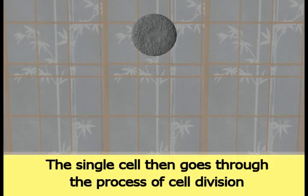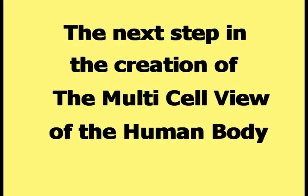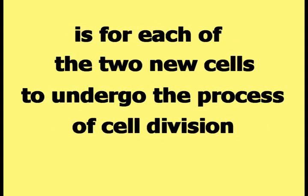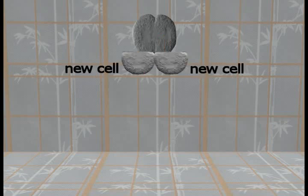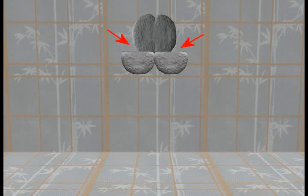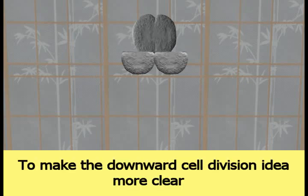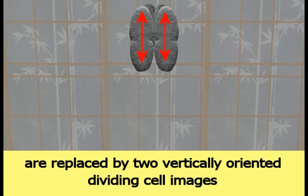The single cell then goes through the process of cell division up to the point shown in this picture, where it has almost completely divided into two new single cells. The red circle encloses the small area where the two new cells are still connected to each other. Each of the two new cells then undergoes cell division. The two cells divide in the downward direction, as demonstrated by two new cells placed below the two parent cells. This picture is aesthetically unpleasing because the new cells do not look connected to the original cells.